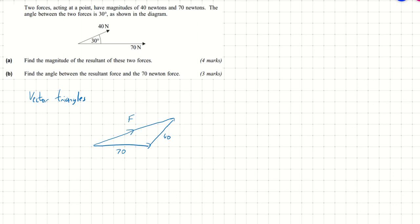The resultant force is the sum of these two forces. We're going to label this as F, and this is a vector triangle. Now let's label some angles. So we know this angle is 30 degrees.